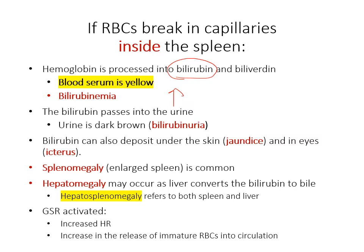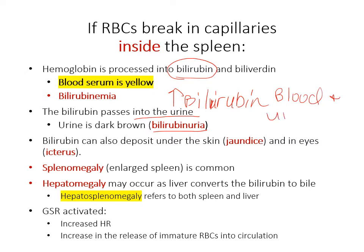This excess bilirubin builds up in the blood, and it also passes into the urine, which is not normal. This results in bilirubinuria — an excess of bilirubin in both the blood and the urine. Know these terms: bilirubinemia and bilirubinuria.